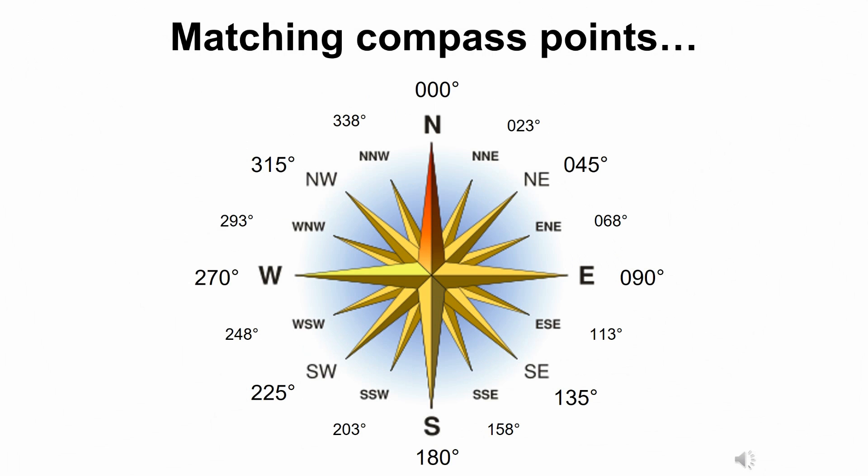Over here you can see approximately what these bearings mean, especially compared to the matching compass points. For example, northeast is approximately 45 degrees, east 90 degrees, south 180, west 270, and north is actually 0 degrees. And if you were to fill in all the gaps, you can go down to a very, very precise direction.